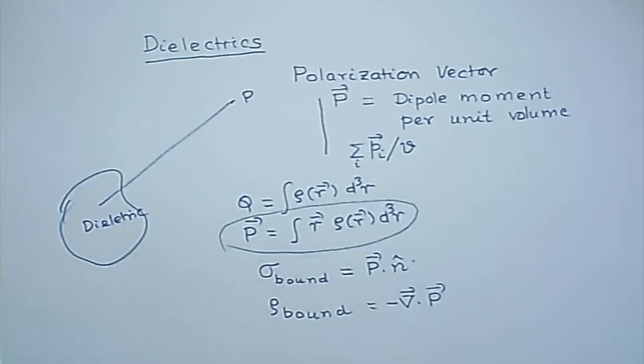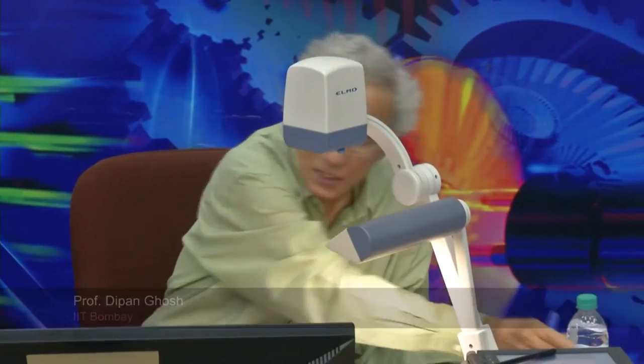There is also a volume charge density, rho_bound or rho_b, given by the negative divergence of the polarization vector. In the tutorial sessions we will work out problems showing that the net charge of a neutral dielectric turns out to be zero — only the charge distribution works out differently. We then said that since we have more or less finished electrostatics, let us summarize the equations we have.